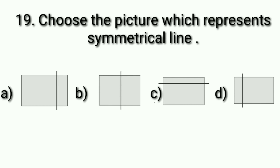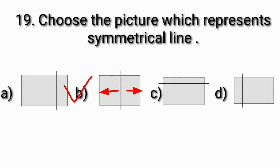Question number 19 is: choose the picture which represents a symmetric line. A symmetric line is a line that divides a picture into two equal parts. In picture A, the area on the left side is more than the area on the right side, so this line is not a symmetric line. In option B, the area on both sides is equal, which means this line is a symmetric line, so we put a tick at option B.